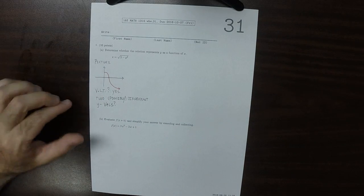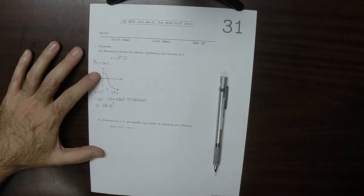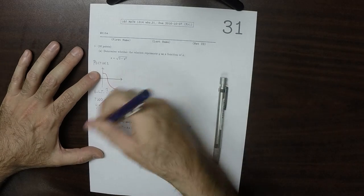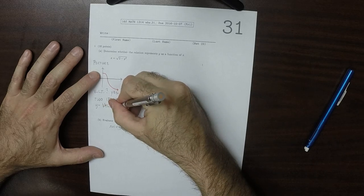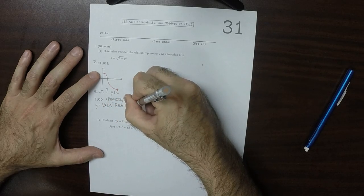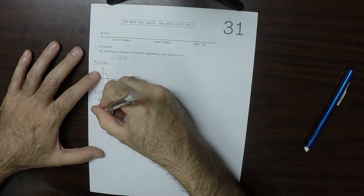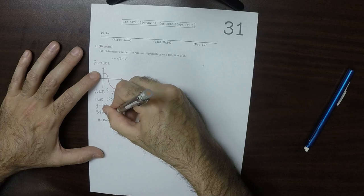Are they reachable from the same x value? So, two possibly different y values reachable from the same x value.